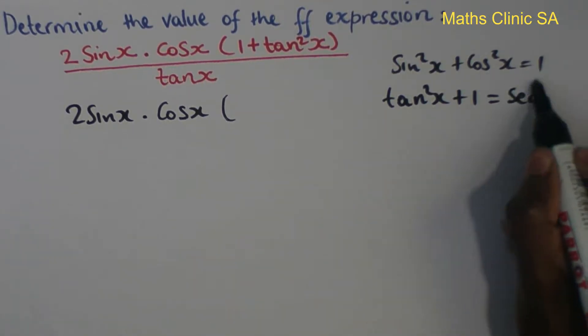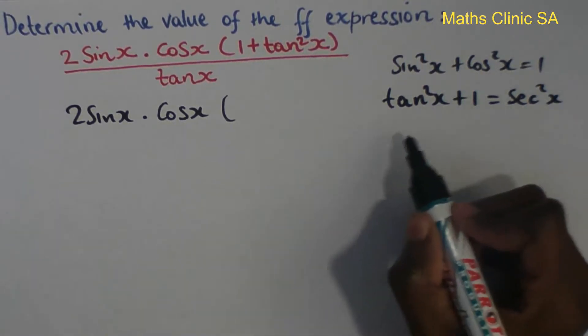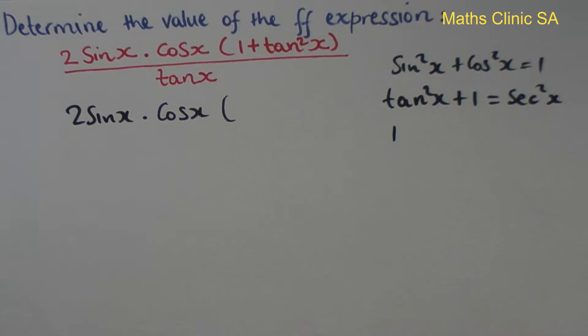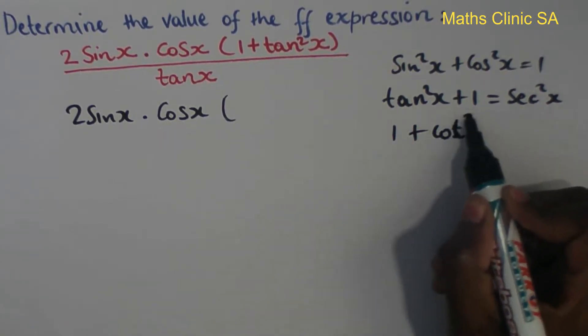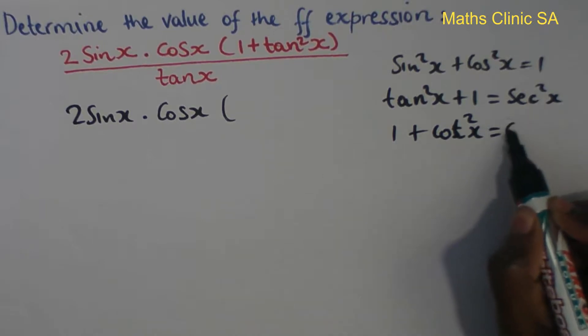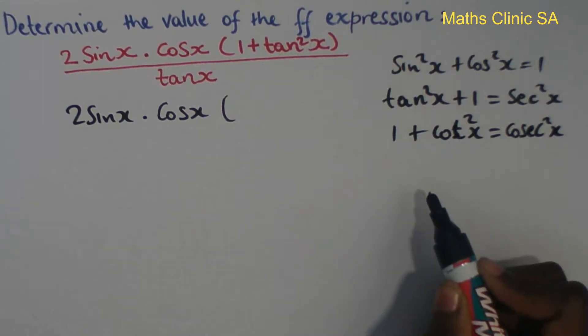sec squared x. And then one plus cot squared x equals cosec squared x. So these are the Pythagorean squared identities.